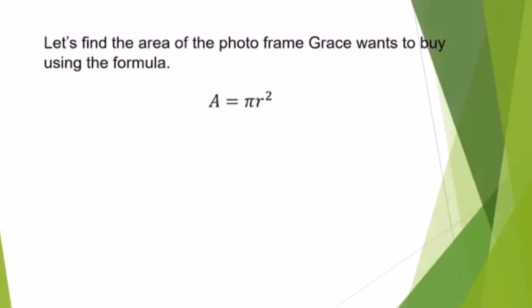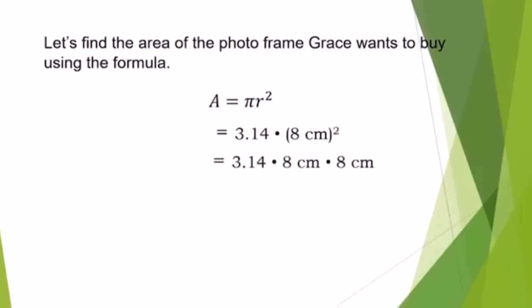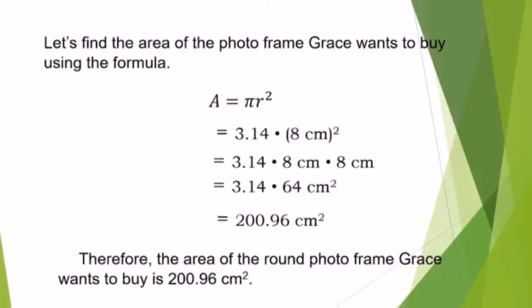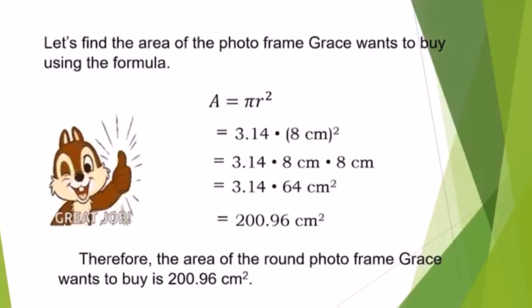Let's find the area of the photo frame Grace wants to buy using the formula. Area equals pi r squared. Pi is equal to 3 and 14 hundredths, and the radius is 8 centimeters. So we have 3.14 times 8 centimeters squared. Since the exponent is 2, we multiply 8 twice: 3.14 times 8 cm times 8 cm. Multiplying 8 by 8 gives 64 square centimeters. So we multiply 3.14 times 64 square centimeters, and we get 200.96 square centimeters. Therefore, the area of the round photo frame Grace wants to buy is 200.96 square centimeters.